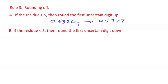If the residue is less than five, round the first uncertain digit down. So let's suppose we have 4.762. And so the residue is two. It's less than five. So we report 4.76. We leave the six alone.